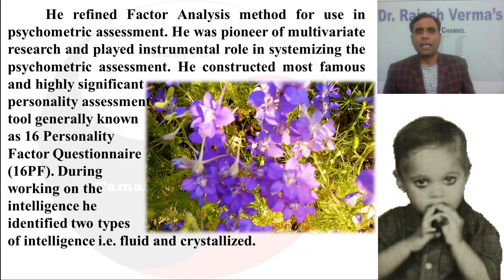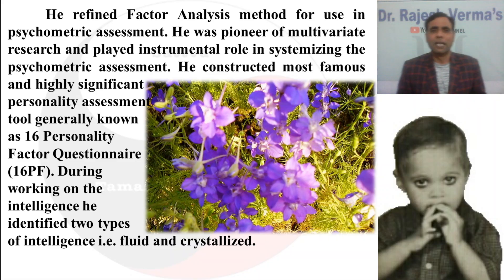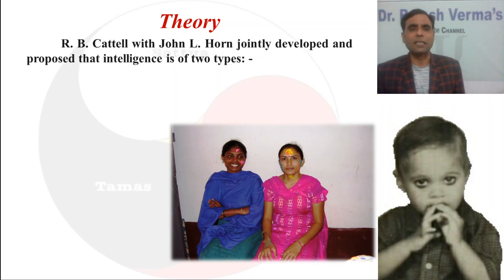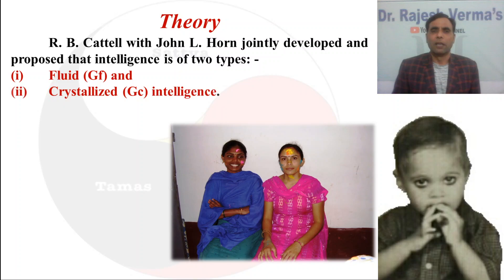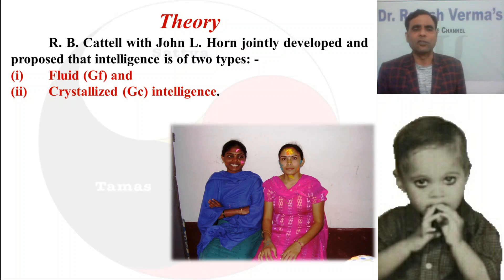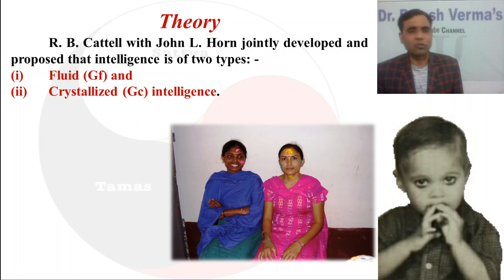During his work on intelligence, Cattell identified two types of intelligence found in human beings and named them fluid intelligence and crystallized intelligence. The theory is not purely by Cattell alone but jointly claimed by R. B. Cattell and Joel Horn, who suggested there are two types of intelligence. He abbreviated them as GF for general fluid and GC for general crystallized intelligence.